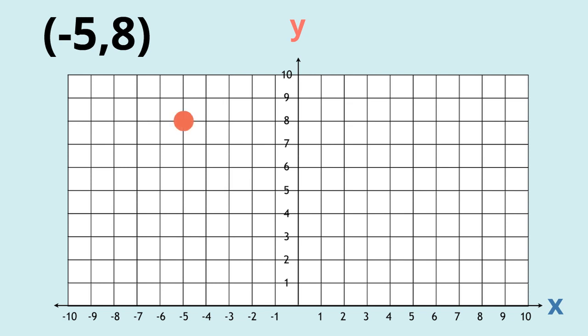So you should have this point right here. Remember the first number is the x number so we go -1, -2, -3, -4, -5, and then we go up the y-axis for the second number up until we hit eight and this is where those two numbers meet.